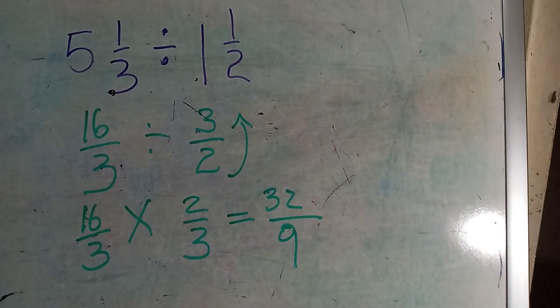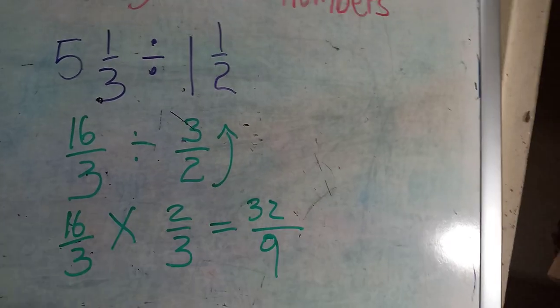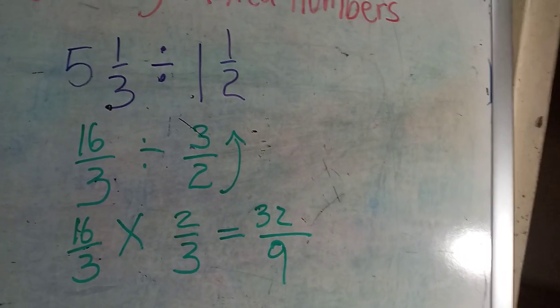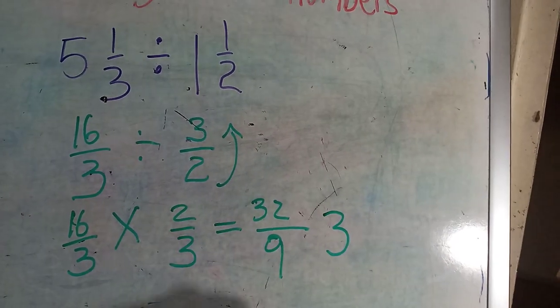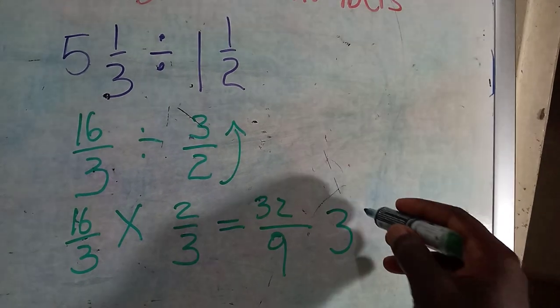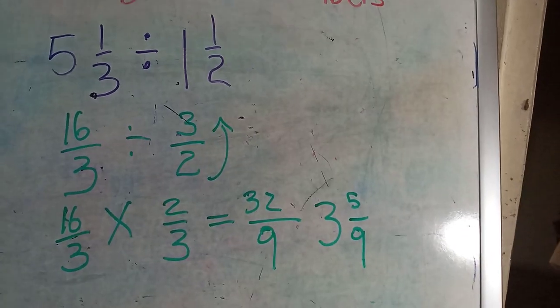We do not leave our answers as improper fractions. So we find out how many times can 9 go into 32. 3 times 9 is 27. That's as close as we can get. And the remainder is going to be 5 over 9.